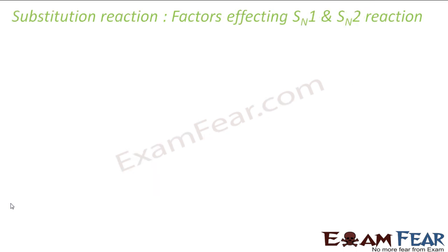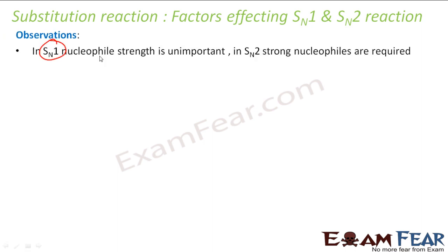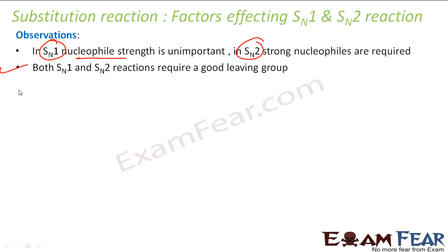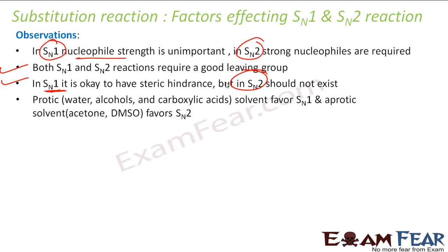Now let us compare factors affecting SN1 and SN2. In SN1, nucleophile strength is not important because the nucleophile plays no role in the rate-determining step. But in SN2, nucleophile strength plays a critical role. Both SN1 and SN2 require a good leaving group. In SN1, steric hindrance is acceptable — in fact, a bulky group stabilizes the carbocation. But in SN2, steric hindrance is a major obstacle because the nucleophile must attack from the back side and needs space. Protic solvent favors SN1 because it encourages X to leave and form HX; aprotic solvent favors SN2.